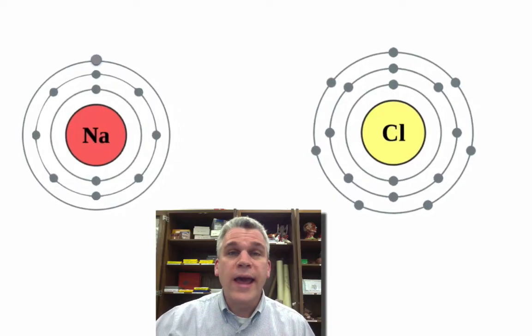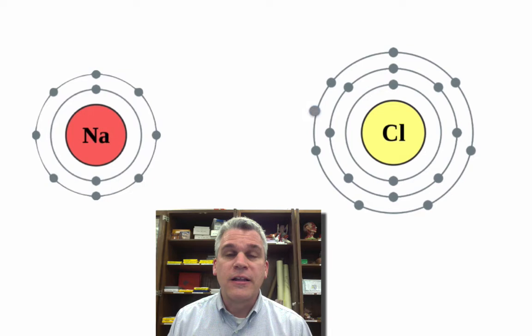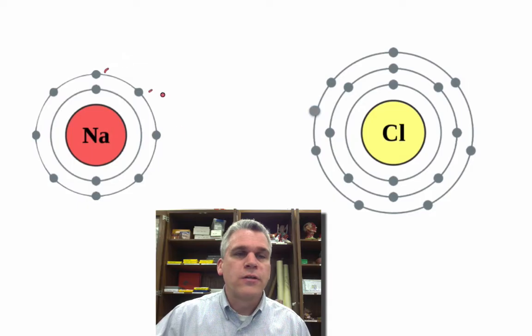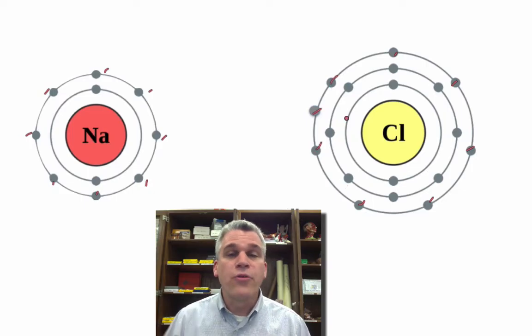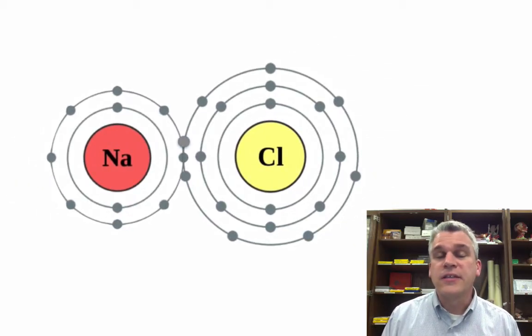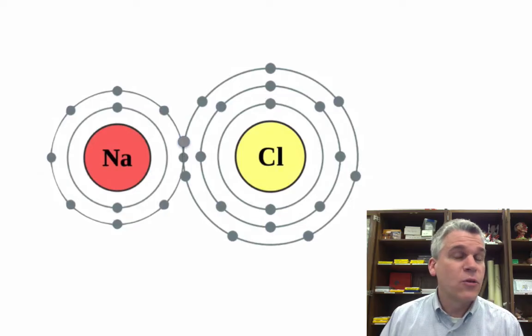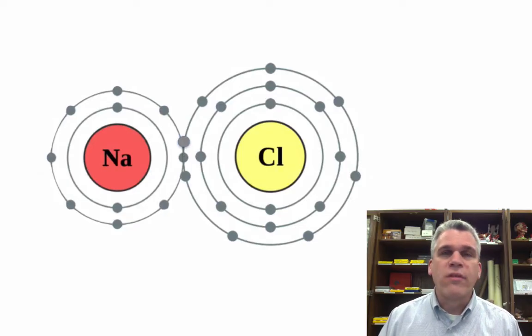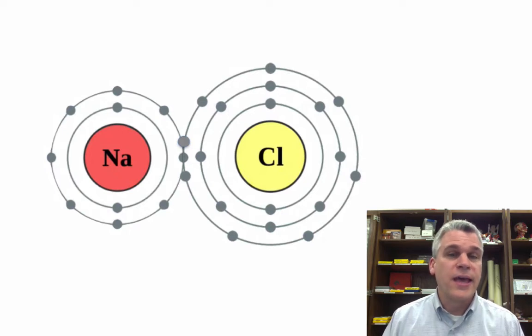And essentially, this is what happens. Sodium is more than happy to donate that one outer shell electron to chlorine, and chlorine is more than happy to accept that outer shell electron. And so when that happens, notice that sodium, with two shells, has eight electrons. Chlorine, with three shells, has eight electrons. They are both happy. And this is what holds them together, this sharing of these electrons. And so we take sodium, which is highly reactive, we take chlorine, which is highly reactive, and it makes one of the most stable compounds on the planet, sodium chloride, NaCl.